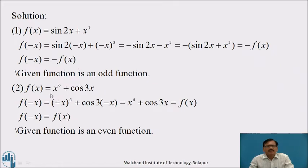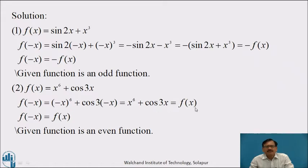Similarly, the second function is f(x) = x⁶ + cos 3x. Replacing x by minus x: f(−x) = (−x)⁶ + cos(−3x). Now (−x)⁶ = x⁶, and since cos(−θ) = cos θ, we get cos 3x. So f(−x) = x⁶ + cos 3x = f(x). Therefore f(−x) = f(x), and the given function is an even function.